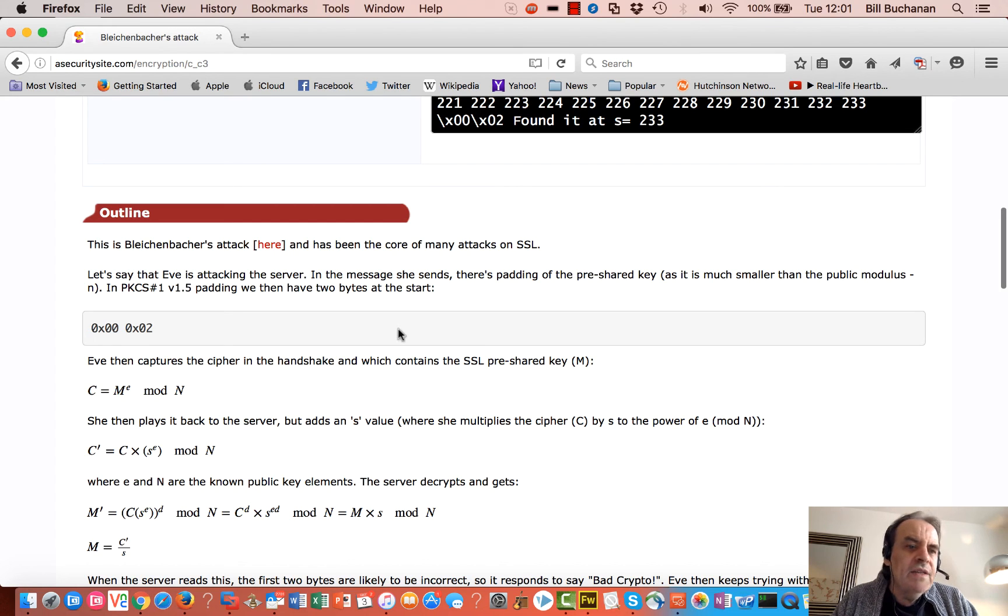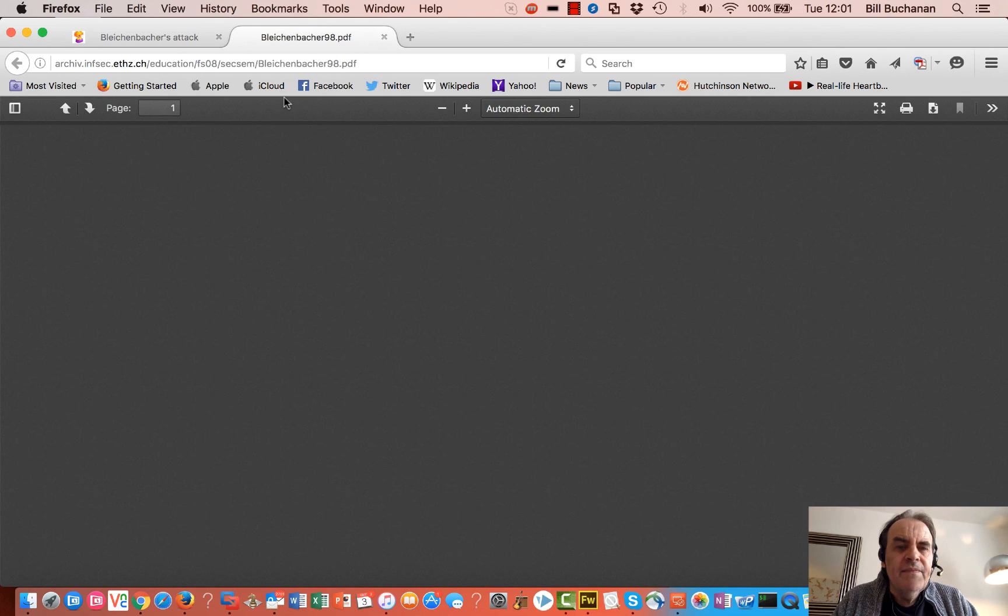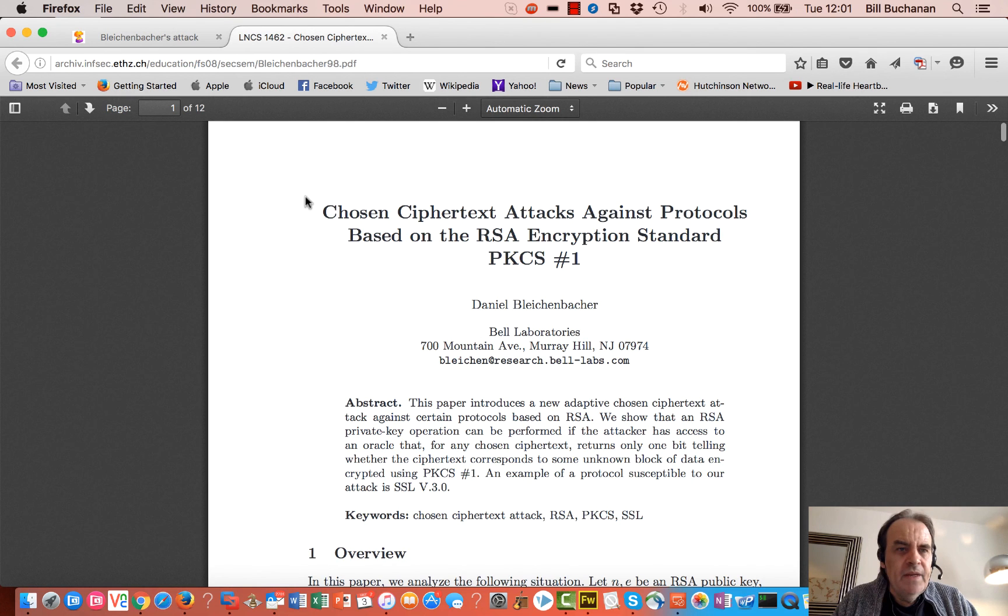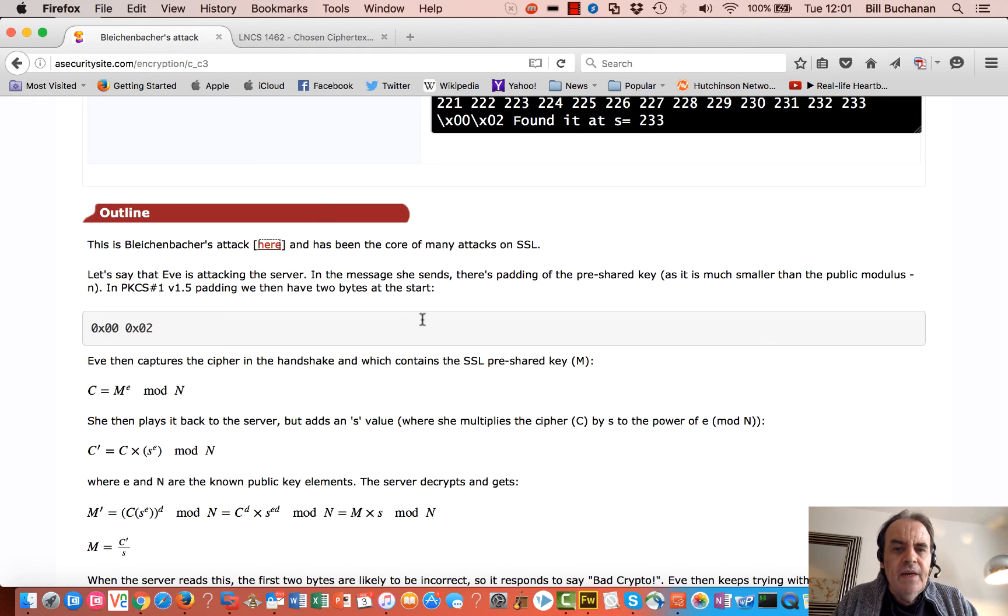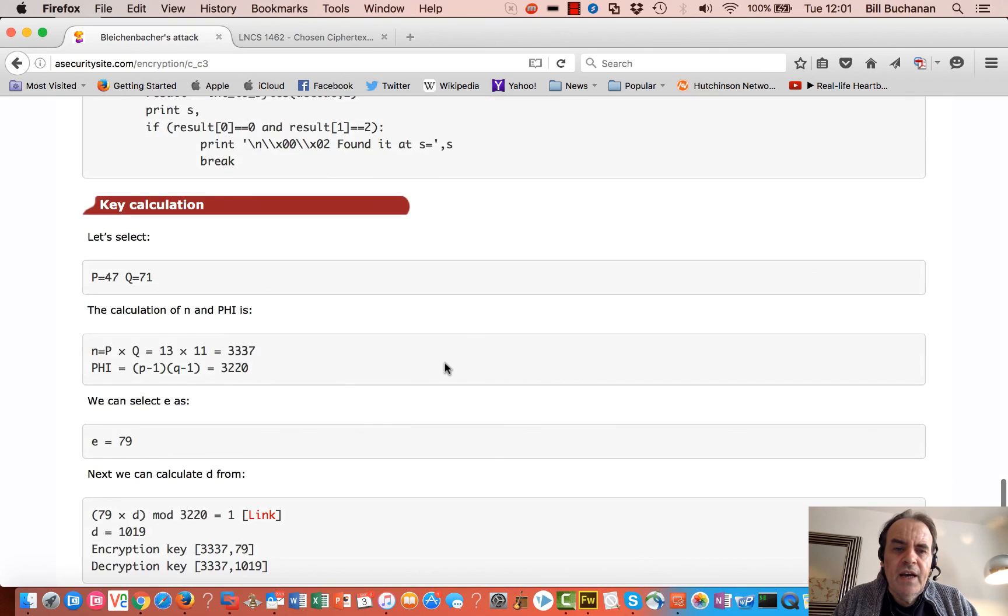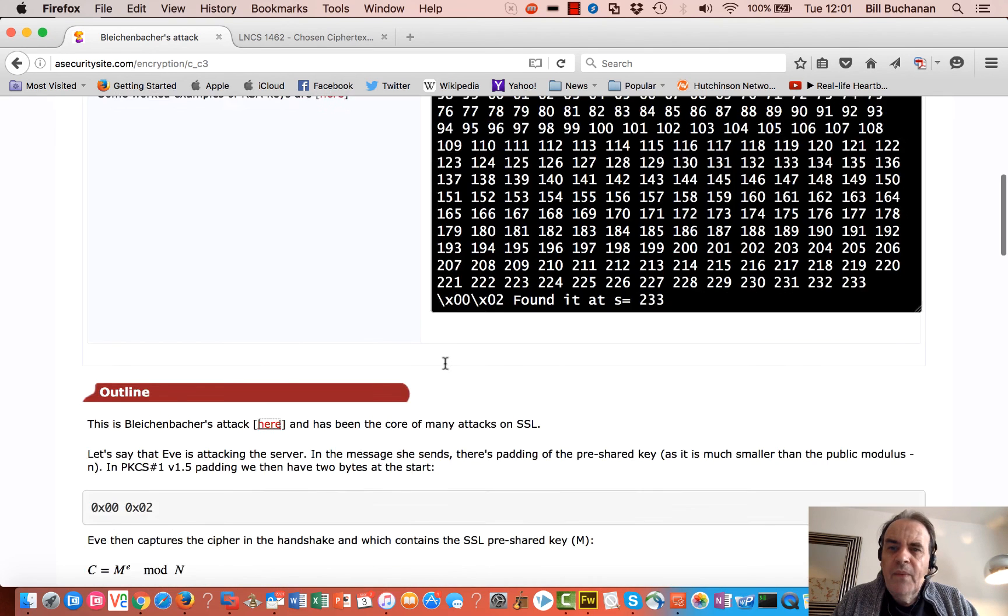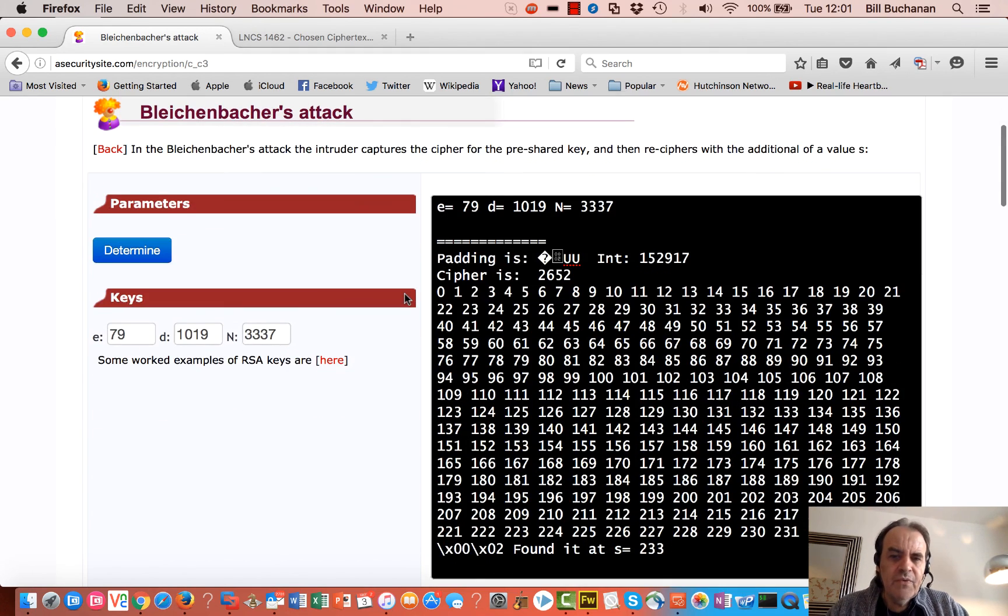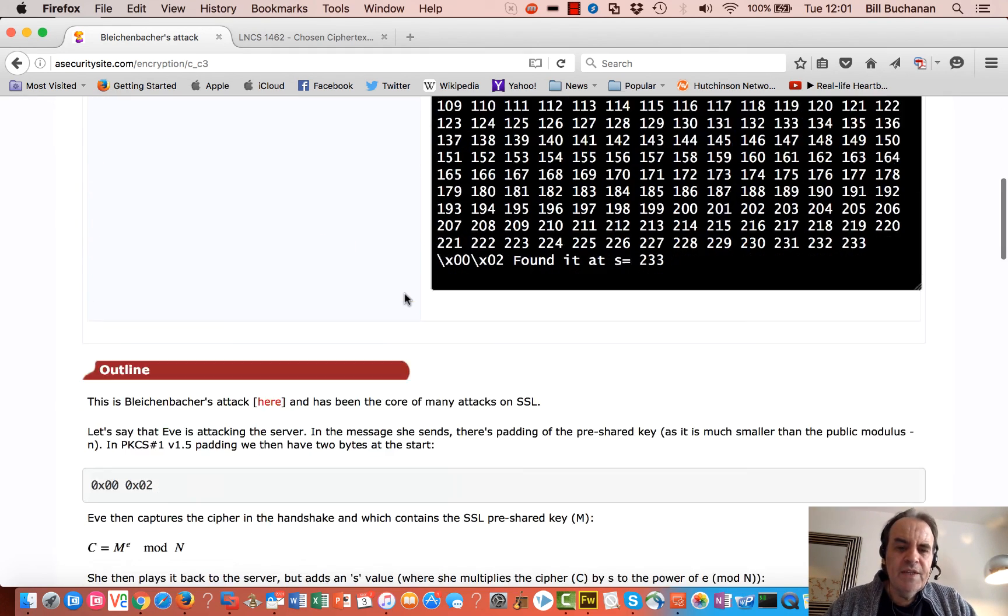The attack is known as the Bleichenbacher attack, and you can actually have a look at the paper here. It is actually a well-known attack on SSL version 2 and version 3, and it has caused lots of problems with websites.